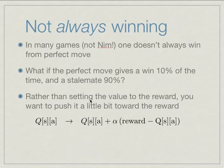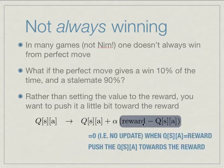So rather than setting the value to the reward, we're going to push the estimate, which is the value that's in our Q table, we're going to push it a little bit towards the reward. So we're going to have an equation that looks something like this. We're going to update our value for the Q for a state action pair, plus some learning rate, some small constant, and then times this piece here, which is the reward minus the current value.